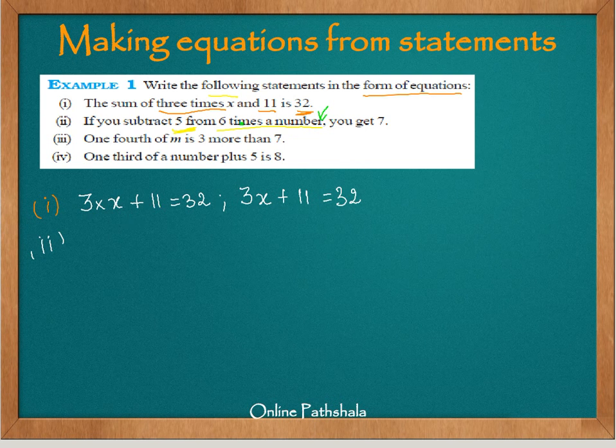So I need to subtract 5 from 6 times the number, which is n. So let's say we have 6n, which is 6 times the number. How much do I need to subtract from it? 5. 6n minus 5. We get 7. So this is my equation. 6n minus 5 is 7.